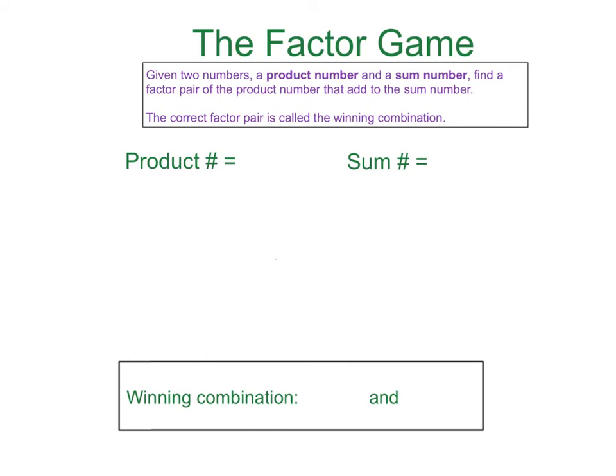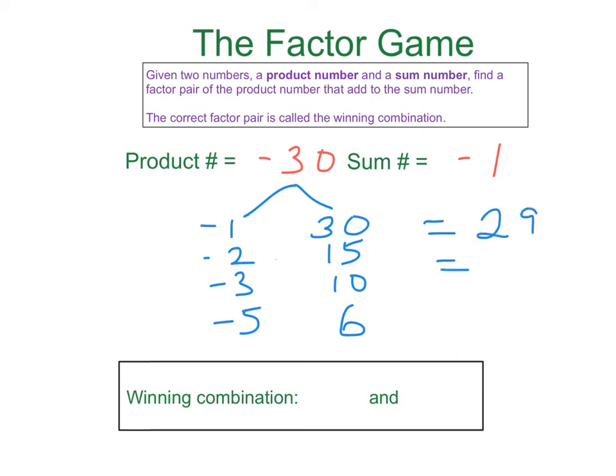Okay, this time negative 30, negative 1. So the product number is negative 30 and the sum number is negative 1. Factor pairs of negative 30, there are a lot of them. I always start, as you know, with 1. So 1 times 30, 2 times 15, 3 times 10, 5 times 6. And as we said before, we're going to negate one side, so negate the left side. Now as I'm doing this, I'm going to recognize that each, the way I've organized it, each of these sums when I add these factor pairs together, we keep getting a positive number. Here's positive 29, here's positive 13, positive 7, and positive 1.